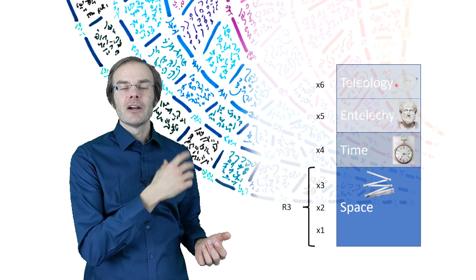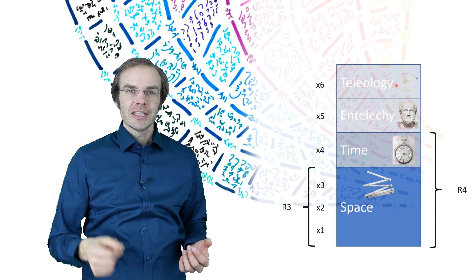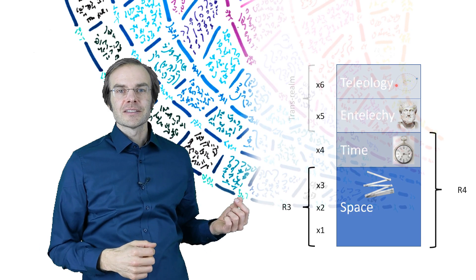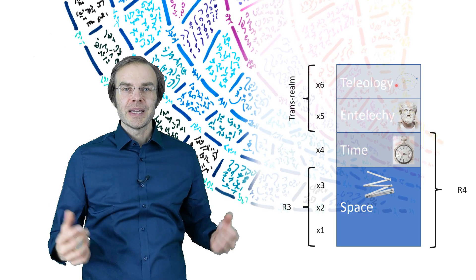Together with time, they form the R4, a four-dimensional space-time. The two additional coordinates introduced in the last video, 5 and 6, he called the transrealm of the world because they transcend ordinary space-time.